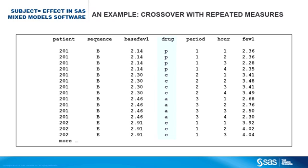Now let's talk a little bit more about the covariance structures in the repeated statement. This is a block diagonal R matrix; the type equals option tells you what goes into each of the blocks. The default structure is variance component, which assumes constant variance and zero covariance. This structure might not be a reasonable choice for correlated errors that are often present in repeated measures data. The most complex structure is unstructured covariance — you have different variances and different covariances. It can sometimes be too complex and overfit your data, and it can also cause memory or convergence issues if your number of repeated measures is large.